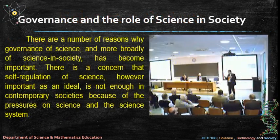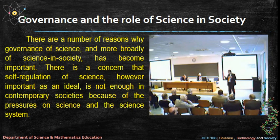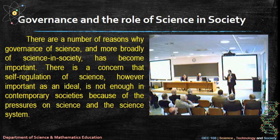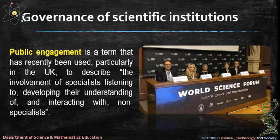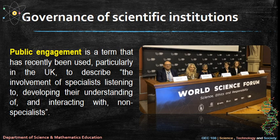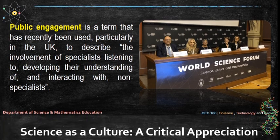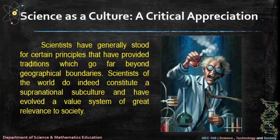Governance and the role of science in society: there are a number of reasons why governance of science — and more broadly of science in society — has become important. There is a concern that self-regulation of science, however important as an ideal, is not enough in contemporary societies because of the pressures on science and the science system. Public engagement is a term used particularly in the UK to describe the involvement of specialists listening to, developing their understanding of, and interacting with non-specialists.